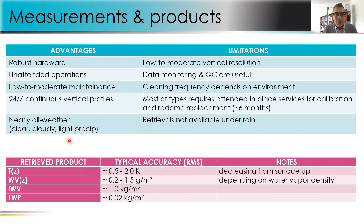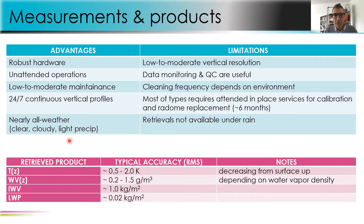Advantages of microwave radiometers include robust hardware, unattended operations, low to moderate maintenance, and continuous vertical profiles in nearly all weather — clear, cloudy, and up to light precipitation. Limitations include low to moderate vertical resolution, the need for data monitoring and quality control to check for instrument drift, and occasional cleaning of the antenna radome. Most types require attended in-place service for calibration and radome replacement about every six months. Retrievals are not available under rain.